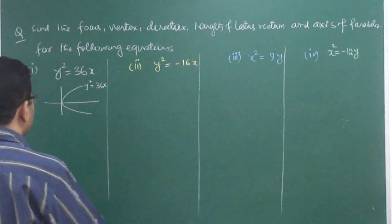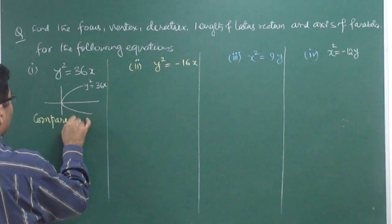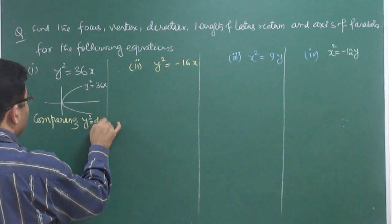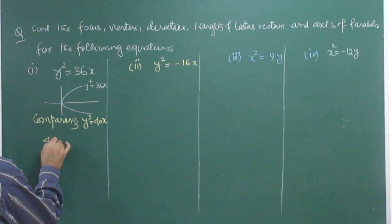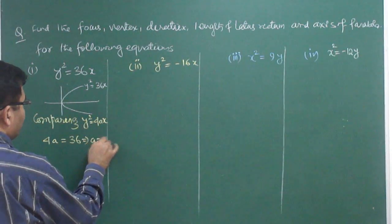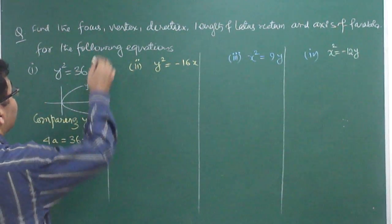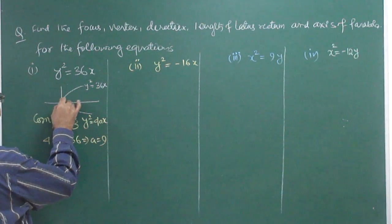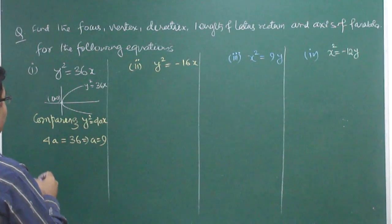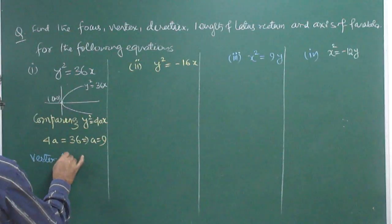Comparing y² = 36x with y² = 4ax, in place of 4ax there is 36, and therefore a = 9. Now we will have the following points. Because this parabola passes through the origin, the vertex is of course (0, 0).